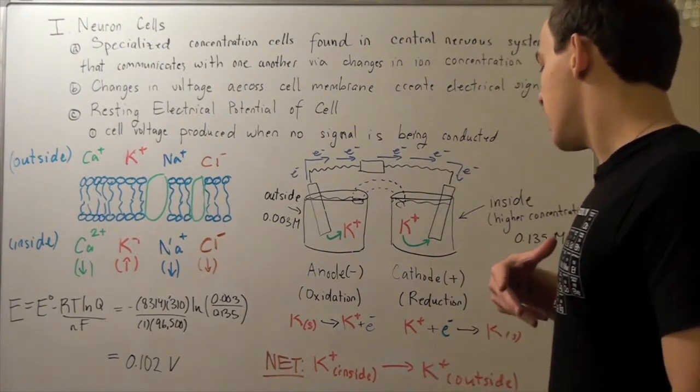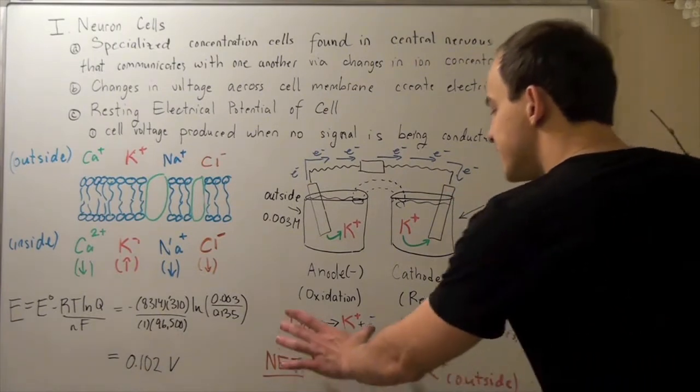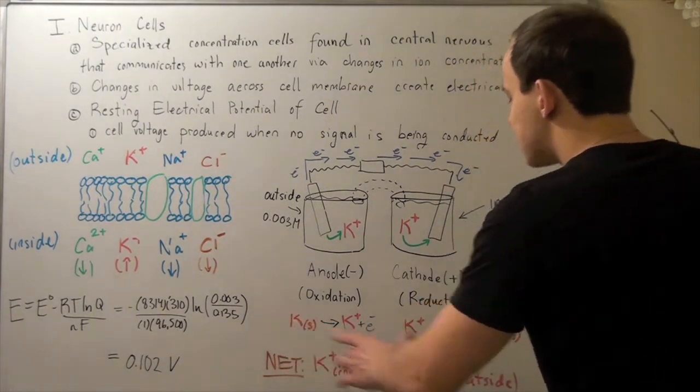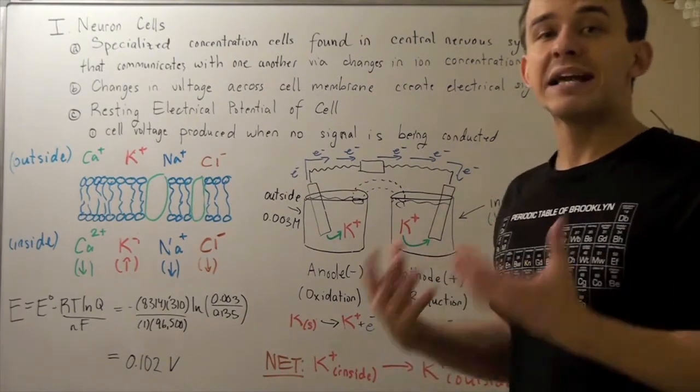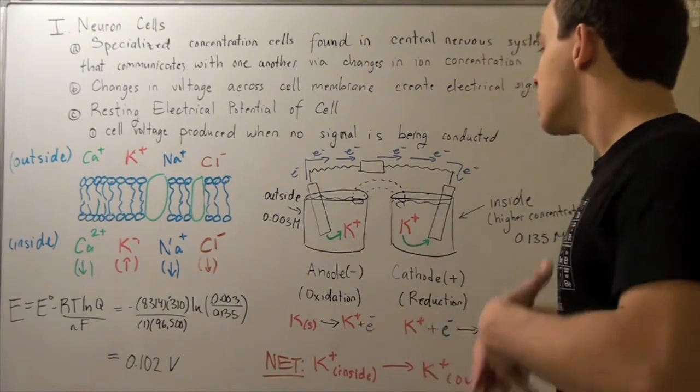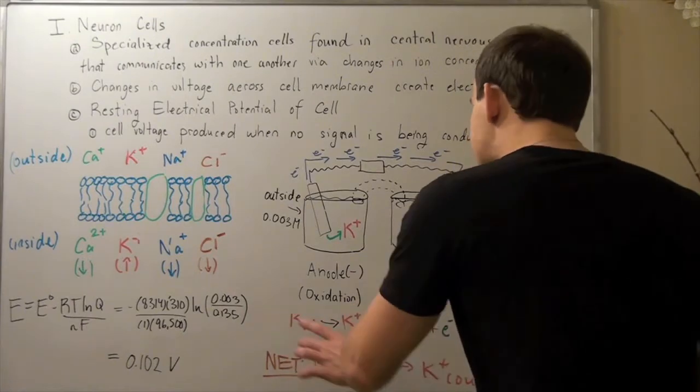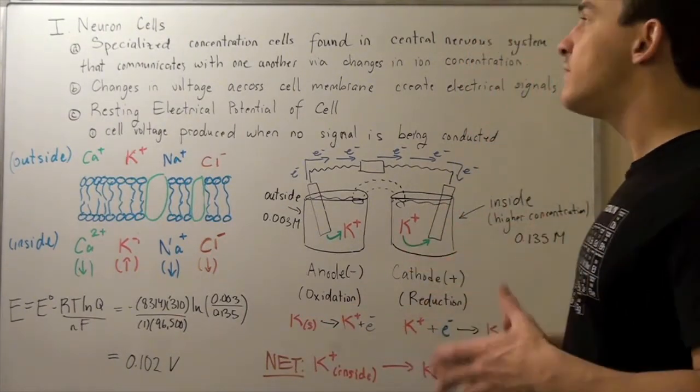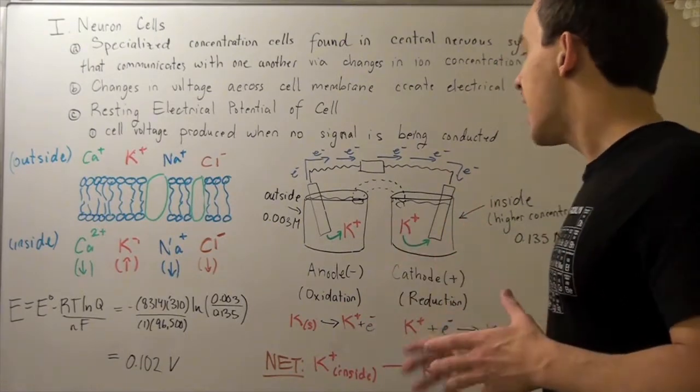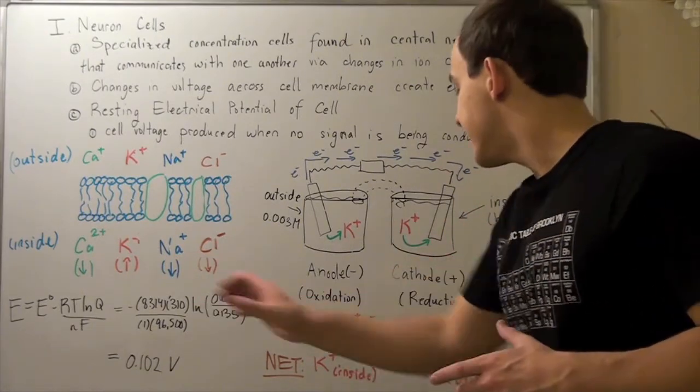If we look up the cell voltage of this oxidation reaction and this reduction reaction, we find that they're the same magnitude but different signs. So, if we add them up, that means they will be zero. And that's exactly what we have in any concentration cell.